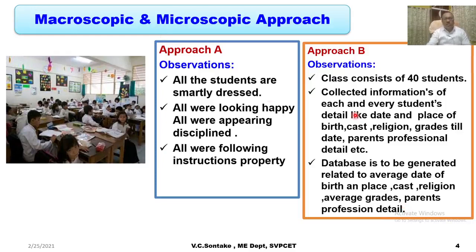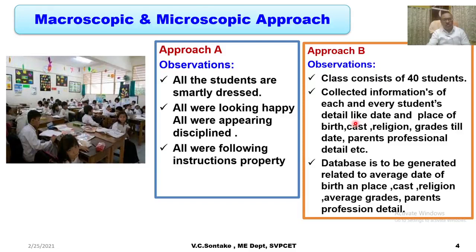The same observer has followed two approaches. In approach A, the observer did not bother about the number of students in the class or the characteristics of each student. Rather, he bothered about the average effect the class has produced. Whereas in approach B, the observer took into consideration how many students there are, what are the characteristics of each and every student, what properties are associated with each student, and how these properties of an individual student affect the overall behaviour of the classroom.